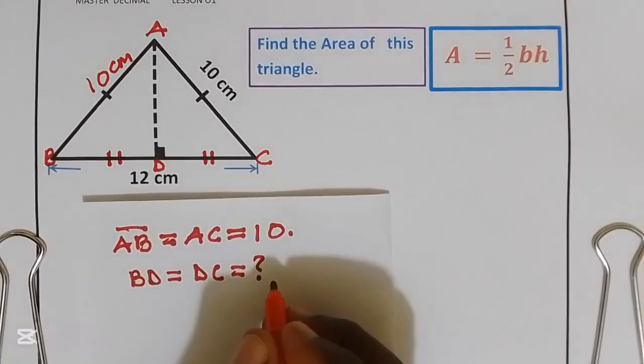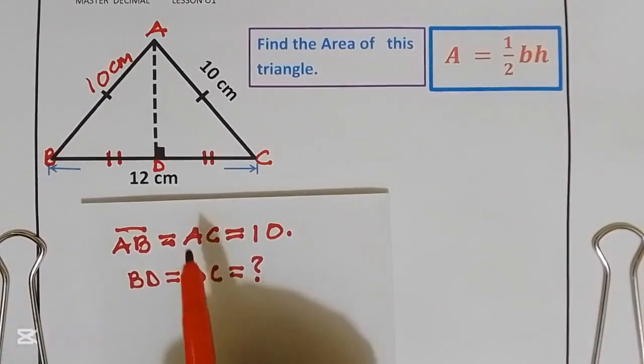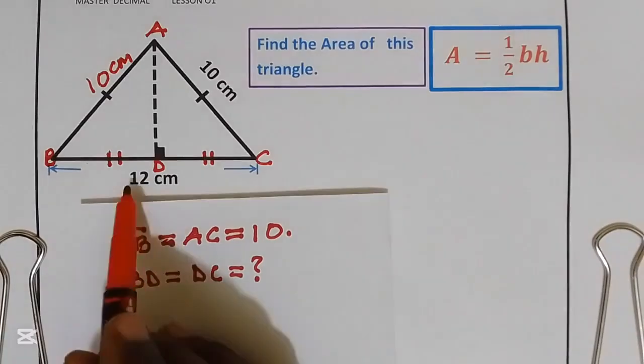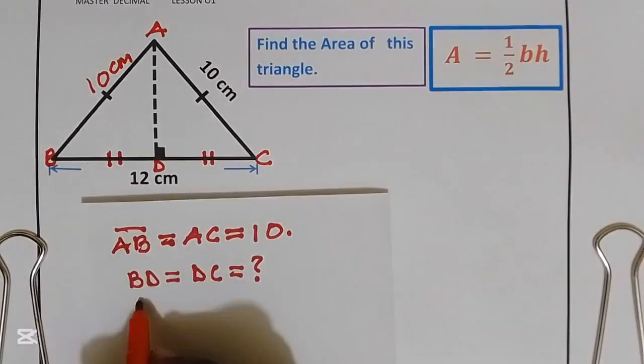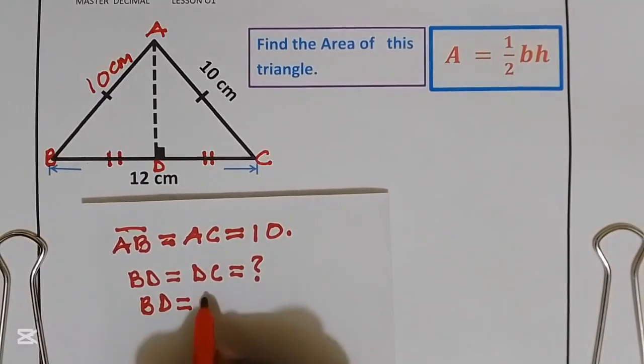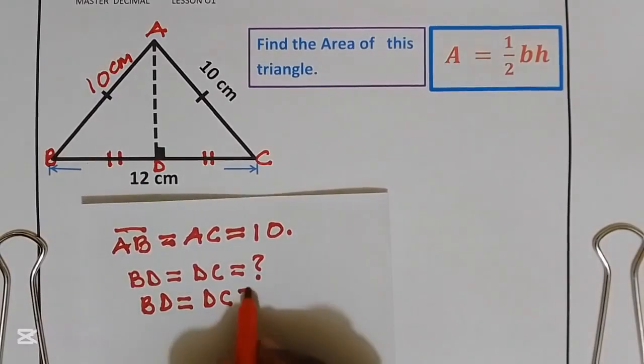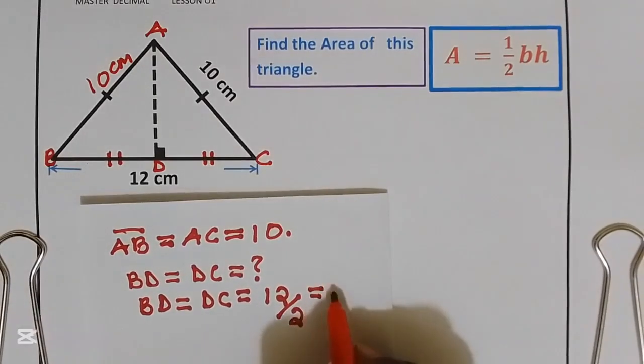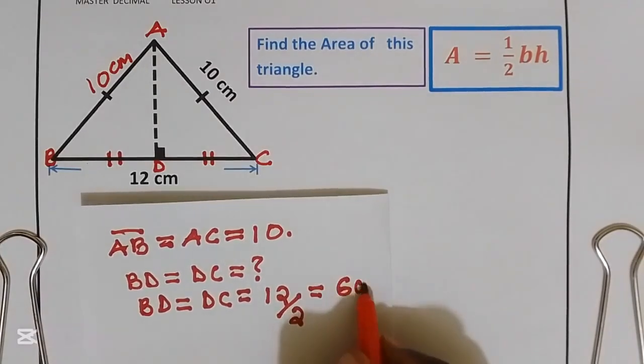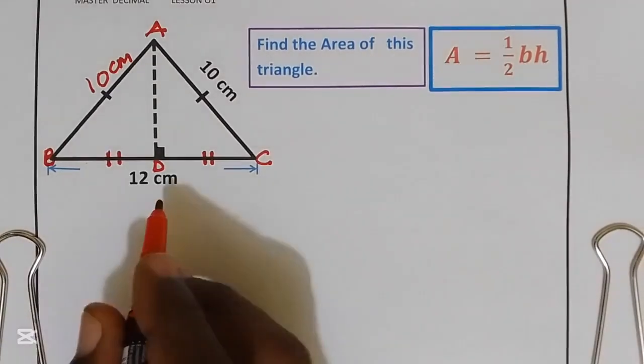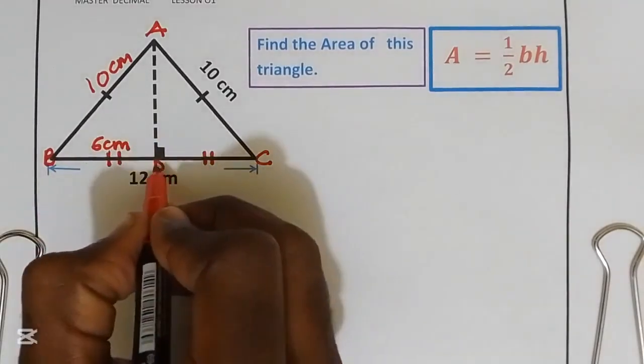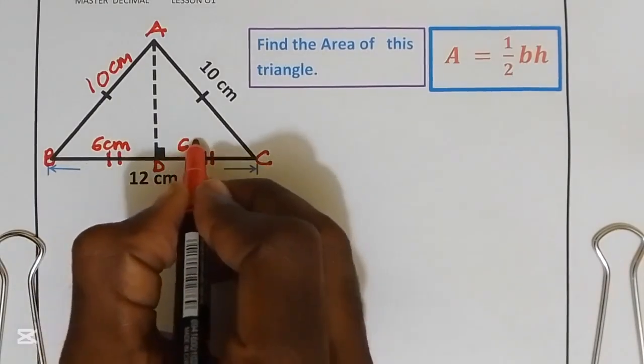Let us find the distance BD and distance DC. Since they are equal, this distance we can get by taking 12 divided by 2. Distance BD is equal to distance DC, which equals 6 centimeters.